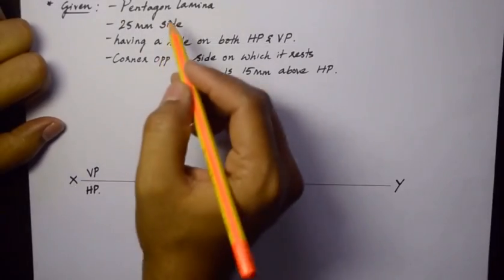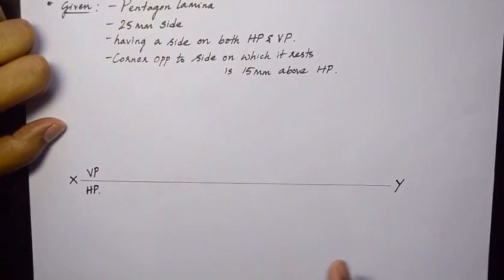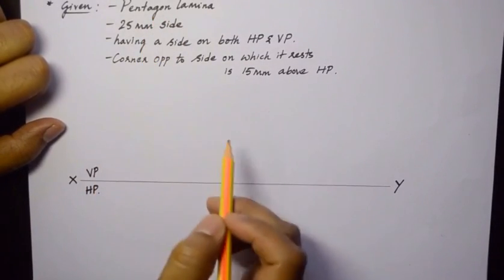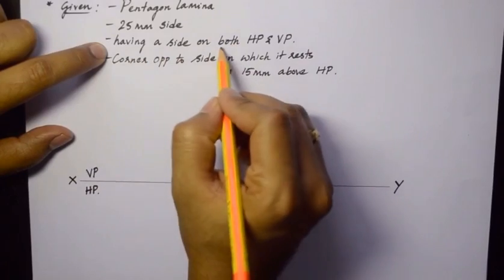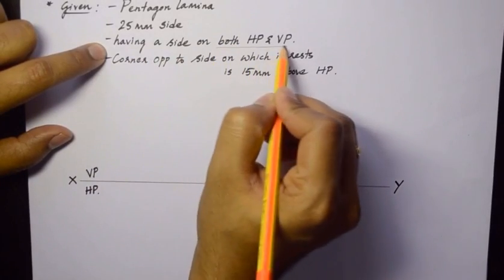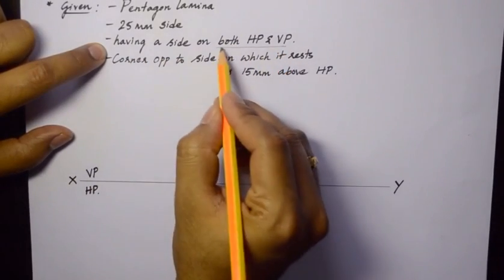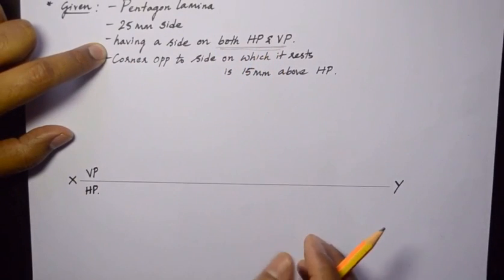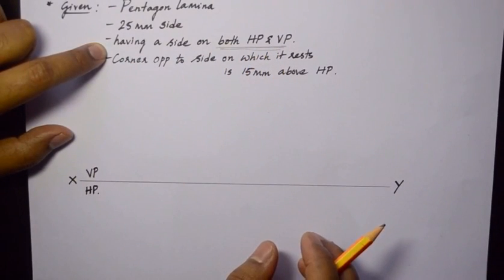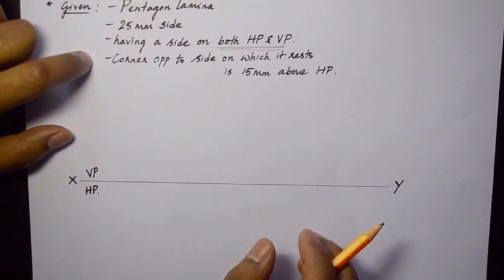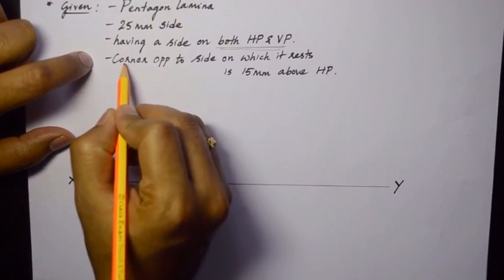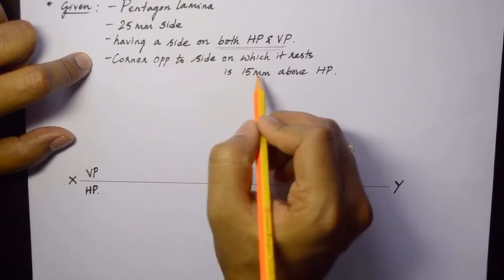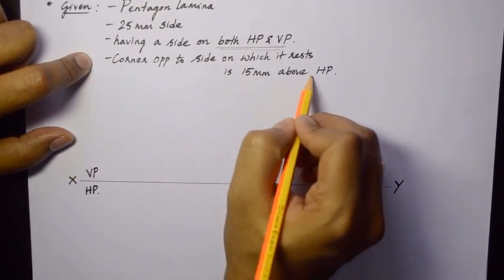I have listed down the data from the problem. We have a pentagonal laminar which is of 25 mm side having a side on both HP and VP. I am underlining it because this is quite a different type of condition which you will find in very few problems in your syllabus. It also says the corner opposite to the side on which it rests is 15 mm above HP.